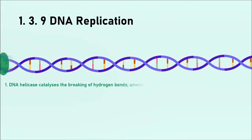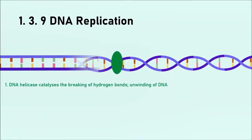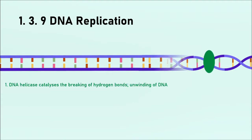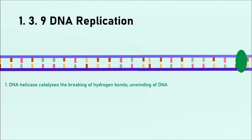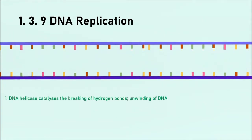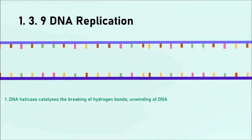Now as you can see, we have two strands which are straight — nothing's wound together, everything's nice and clear — and now the replication can happen properly. The strands separate and move apart from each other. DNA helicase is continuing to break these hydrogen bonds between the two strands, working from left to right. Now these two strands are exposed, and the bases on them act as templates for free nucleotides found in the nucleus to come along and start attaching to them to form a new strand.